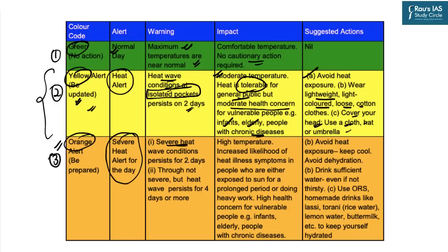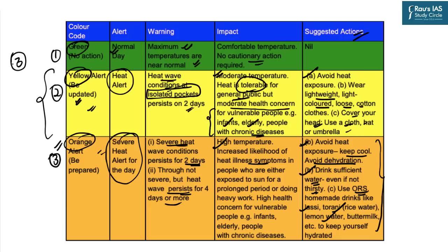The most severe category is the orange alert — a severe heat alert. Severe heat wave conditions persist for two days and heat waves may persist for four days or more. High temperatures increase the likelihood of heat illness symptoms and not just vulnerable people but the general public will also be affected. Suggested actions during orange alert: avoid heat exposure, keep cool and stay hydrated, drink sufficient water even if not thirsty, use ORS, homemade drinks like lassi, rice water, lemon water, etc. These are the three color-code based warning systems given by IMD in relation to heat waves.